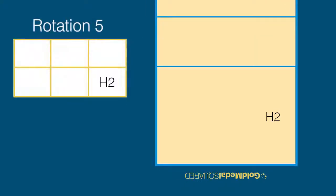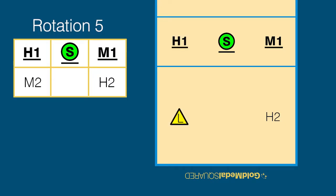In rotation 5, player positioning is as follows: the H2 in zone 1, followed by the M1, the setter, the H1, the M2 in the back row replaced by the libero, and the opposite.